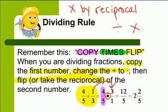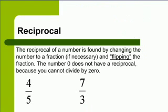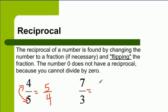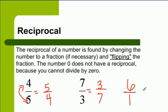Remember, the reciprocal is just a flip of the number. The reciprocal of a number is found by changing the number to a fraction, if necessary, and flipping the fraction. The number zero does not have a reciprocal because you can't divide by zero. So if we start out with four-fifths, the reciprocal would be five over four. If we start out with seven over three, the reciprocal is three over seven. If we start with the number six, we first have to make it a fraction and then flip it as the reciprocal.